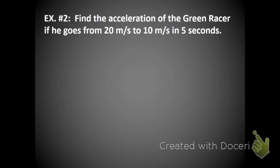Let's try another example. Here we're going to find the acceleration of the green racer if he goes from 20 meters per second to 10 meters per second in 5 seconds. So just by glancing at it, I can tell that the racer is slowing down.